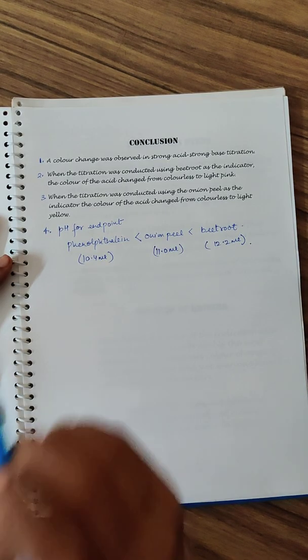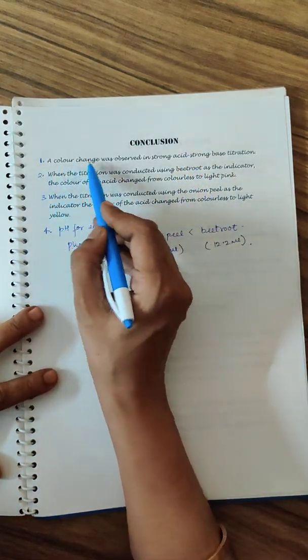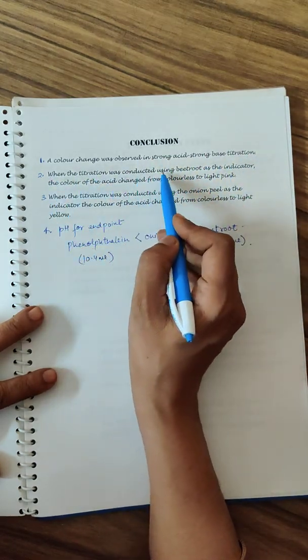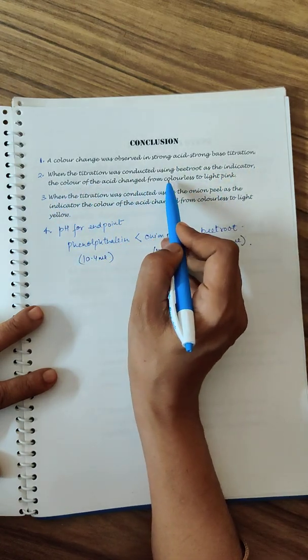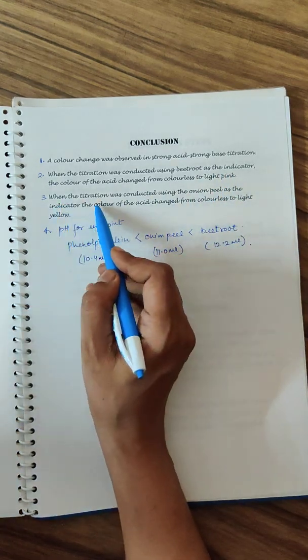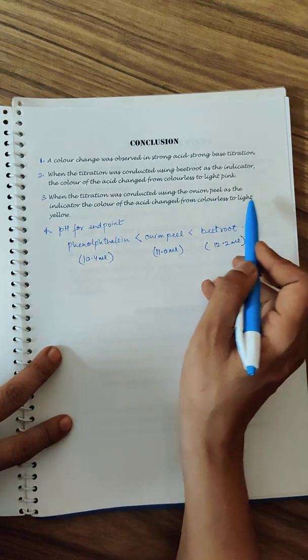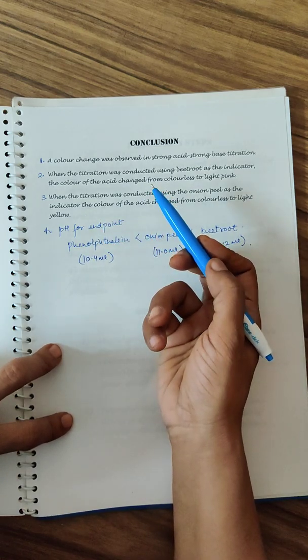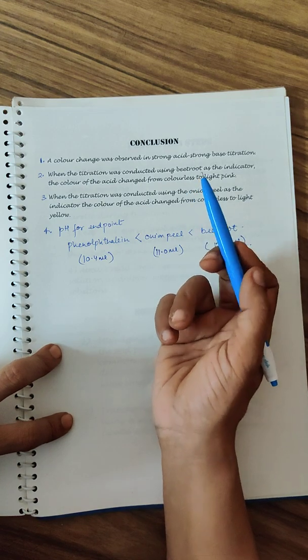Now coming to the most important part - the conclusion of the project. The color change was observed in strong acid and strong base titration. When the titration was conducted with beetroot indicator, the color of the acid changes from colorless to lightest possible pink as done for phenolphthalein. When titration was done using onion peel indicator, the color of the acid changes from colorless to light yellow. It could be different for rose, petunia, or marigold.